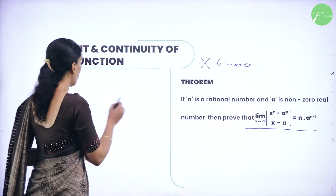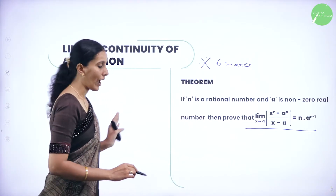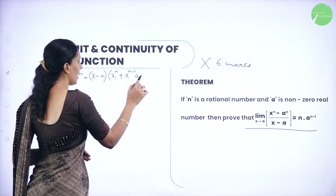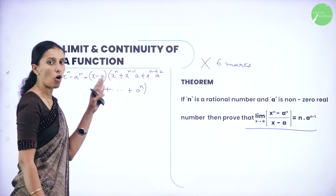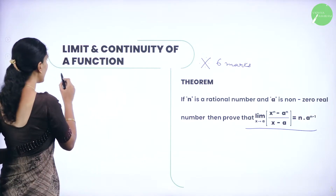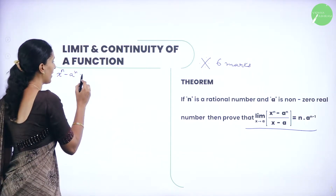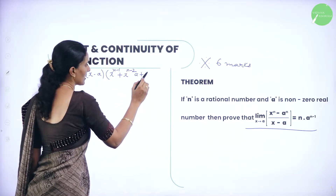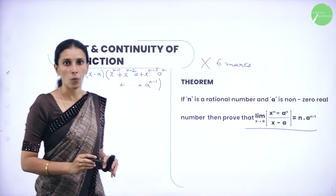Now let us prove the result. Consider the expansion of the term x power n minus a power n. From binomial expansion, we can write this as x minus a into x power n minus 1 plus x power n minus 2 times a plus x power n minus 3 times a squared, and so on, with the last term being a to the power n minus 1.